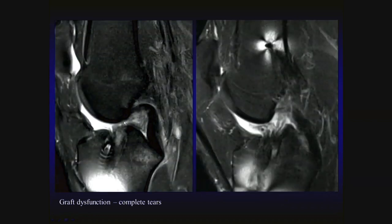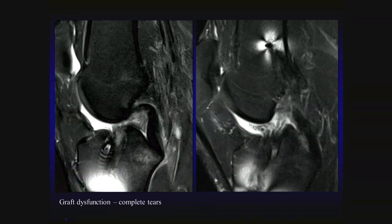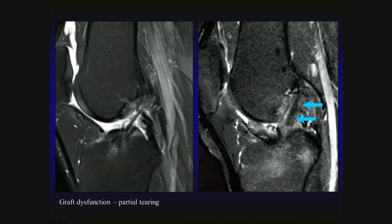Two other patients show evidence of complete tears of prior ACL reconstructions, with non-visualization of the normal ACL graft where expected in the intercondylar region, and focal discontinuity of graft fibers that are redundant and flipped anteriorly on T2-weighted sagittal acquisition. Partial tears show some intact fibers with other fibers completely disrupted. High-grade near-complete tears still show residual wisps of ACL graft in continuity, but with the majority of fibers torn in both cases.